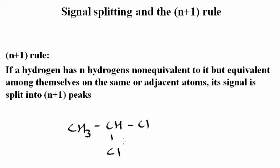So, let's apply this N plus 1 rule to the analysis of the spectrum for this molecule here, 1,1-dichloroethane. The three hydrogens of the CH3 group have one non-equivalent neighbor hydrogen. Therefore, the signal for these three hydrogens is going to be split into a doublet.